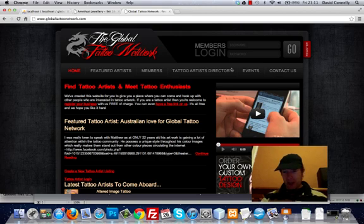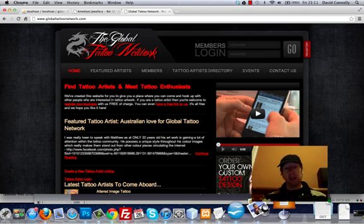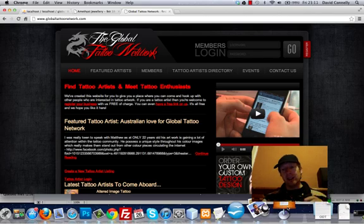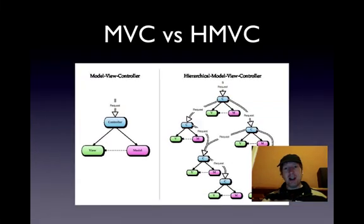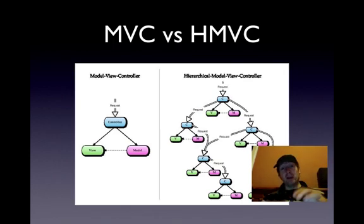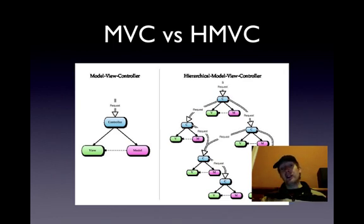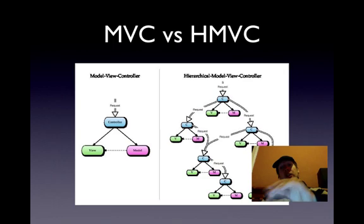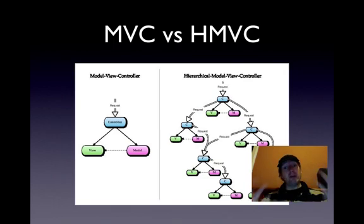HMVC respects that vibe, but in HMVC we have lots of model-view-controllers — we call them triads, they're kind of like clusters. On the left we have standard MVC, your three folders. If you've used CodeIgniter you'll be very familiar with that. HMVC has clusters of MVC triads, and you can have as many as you want. The other cool thing is that controllers can call other controllers from other modules, and you can even call other modules from view files, which makes life really easy, especially when adding widgets.